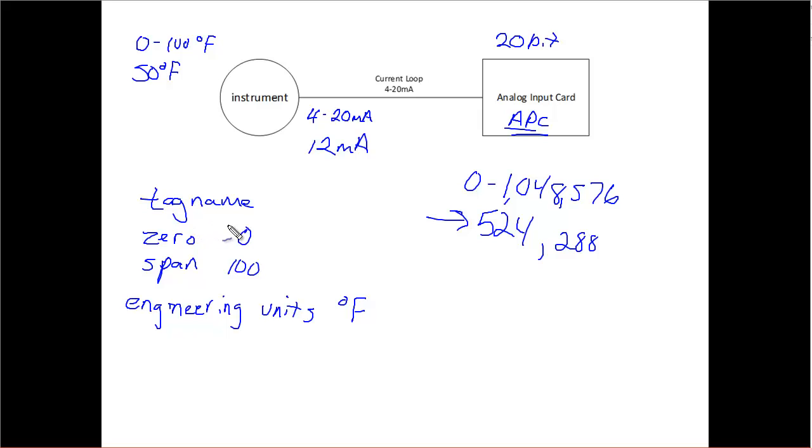When I'm looking at my overall system in my electric grid, this tag name, I should be able to somehow figure out that tag name is coming from this particular analog input card. The zero to 100 tells me what my reading is that I'm taking. My engineering units tells me what the units are here. So if I go to this analog input card, and I look up that tag, and I see this value, I should be able to figure out what temperature I'm reading. Hopefully that's starting to make a little bit of sense to you.